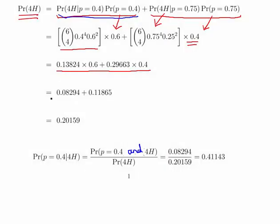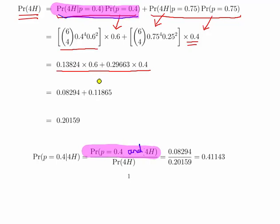Restarting here because of a spotted error. Using Bayes' theorem and the conditional probability formula again: the probability of the assumed probability being 0.4 given four heads — the posterior distribution — equals the probability of p = 0.4 and four heads, divided by the probability of four heads. That is 0.08294 divided by 0.20195, which works out to be 0.41143.